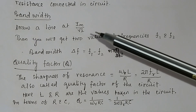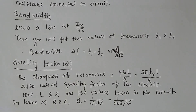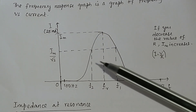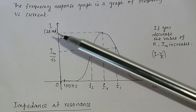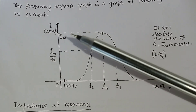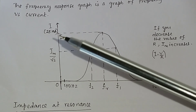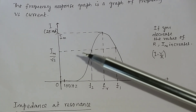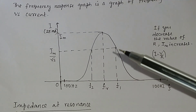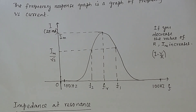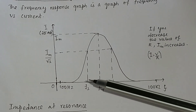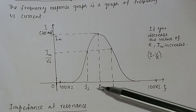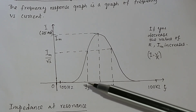How can you calculate the bandwidth? If you draw a line on the frequency response curve at the value I_m divided by root 2 — suppose the maximum current is 20 mA, then you take 20 divided by root 2 and draw a line parallel to the frequency axis — you will get two frequency values, F1 and F2. The difference F2 minus F1 is called the bandwidth.